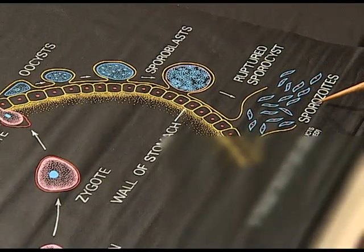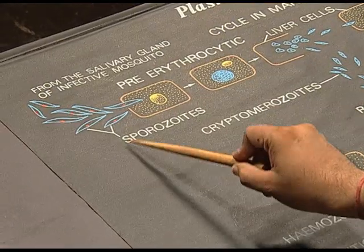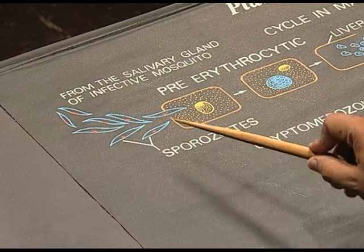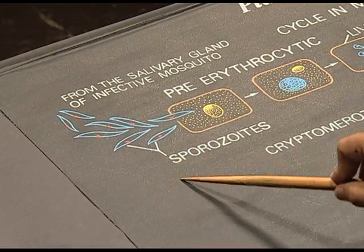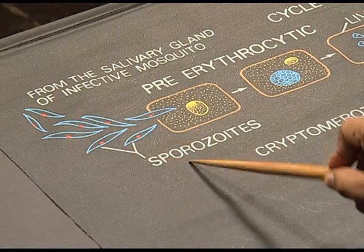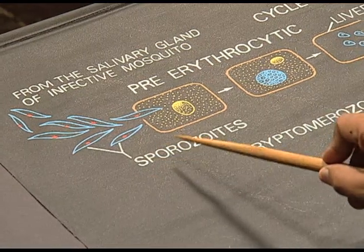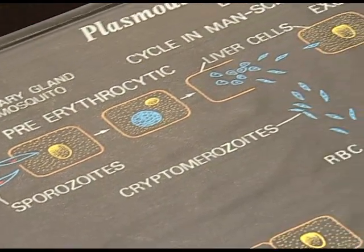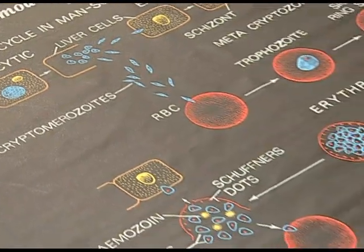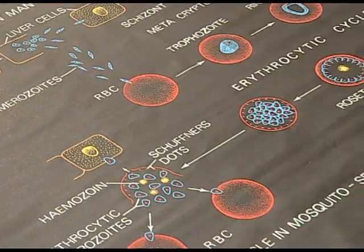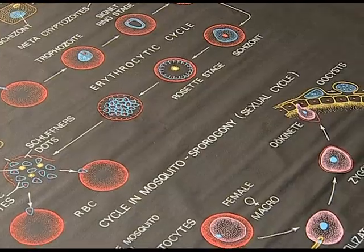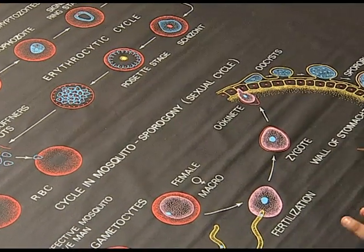The sporozoites present in the salivary gland are again introduced into the blood stream when any infected mosquito feeds on a healthy human being, and this cycle will continue. This is the entire life cycle of Plasmodium falciparum.